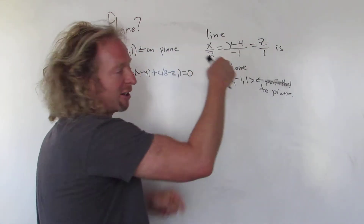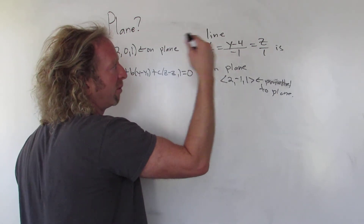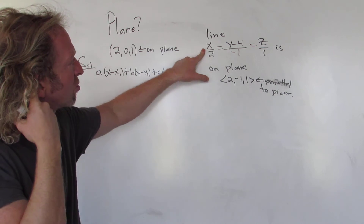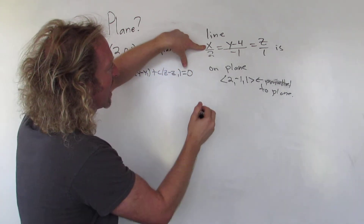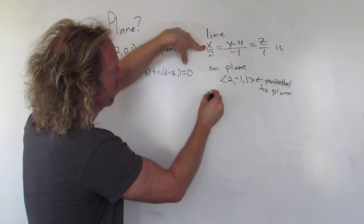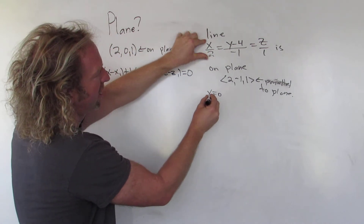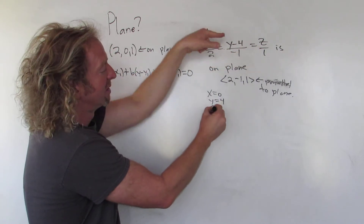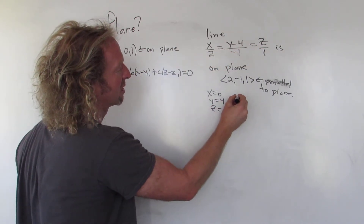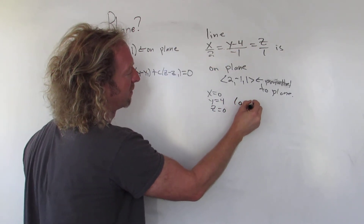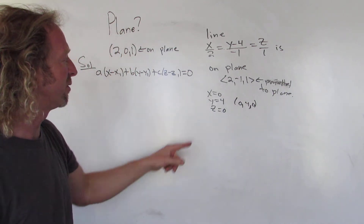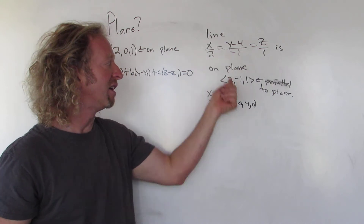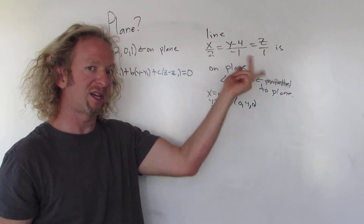Well, just plug in any number — you can find another point on the plane by just picking numbers in the symmetric equations. If I make x equal to 0, I get 0 here. To make this 0, I make y equal to 4. And to make this 0, I make z equal to 0. So the point (0, 4, 0) satisfies the equation. This point is on the line, and therefore it's on the plane because the line is on the plane.